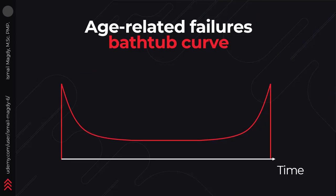Here we have one of the failure patterns which is called the bathtub curve, and it is called bathtub curve because it is shaped as a bathtub as you can see here. It is a relation between time and rate of failures. The first part of the curve is called the infant mortality phase, which is the phase directly after equipment installation, and in this area we have a high probability of failures due to issues in installation, manufacturing, commissioning, and startup.